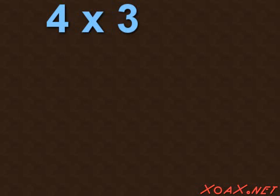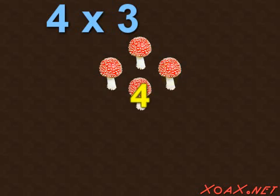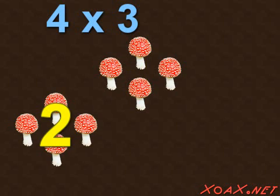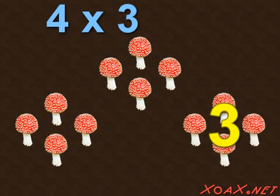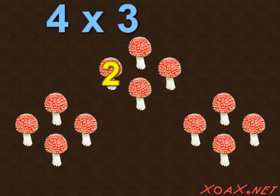If we take it in the opposite order, we have 4 times 3. So take 1, 2, 3, 4 toadstools and multiply that by 1, 2, 3.